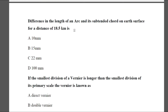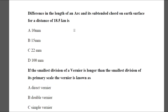Question 5: The difference in the length of arc and its subtended chord on the earth's surface for a distance of 18.5 km is — Option A: 10 mm, Option B: 15 mm, Option C: 22 mm, Option D: 100 mm. The answer is B — 15 mm.